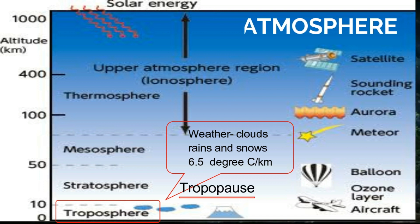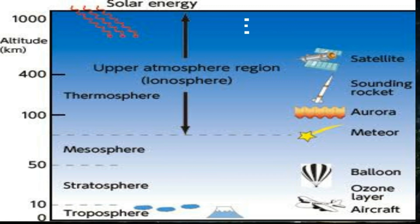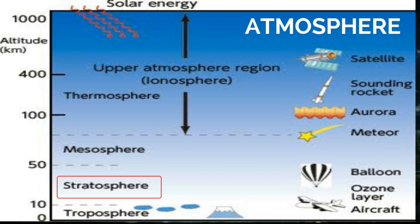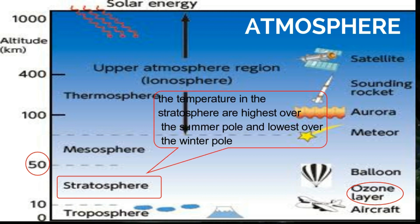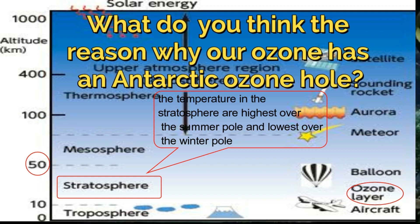The tropopause is about 7 to 10 kilometers above the Earth's surface. The next layer is the stratosphere, which extends upward from the tropopause to about 50 kilometers. It contains much of the ozone in the atmosphere, and temperatures in the stratosphere are highest over the summer pole and lowest over the winter pole. But what is the reason why our ozone has a hole? It is because of CFCs from refrigerators, spray cans, and fire extinguishers, which lead to the depletion of the ozone layer.